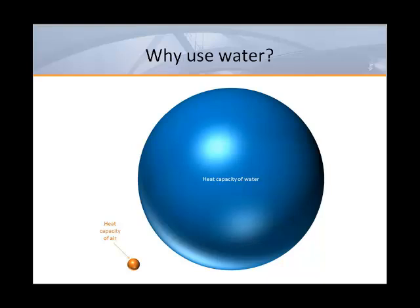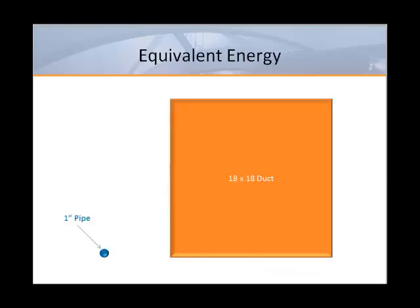The water either releases its energy through the coil to the air, as in the case of the unit being in heating mode, or absorbs heat from the occupied space when in cooling mode. As an equivalent energy comparison, a 1-inch water pipe can transfer the same amount of energy as an 18-inch by 18-inch air duct. The 1-inch pipe will require less space and less material to install, leading to lower costs.